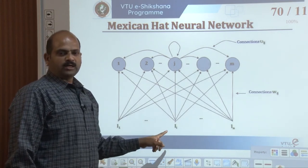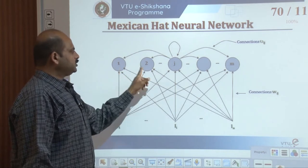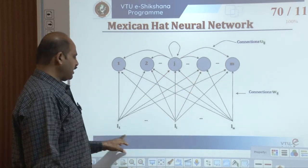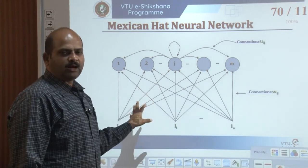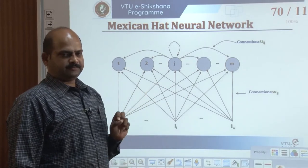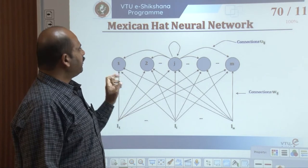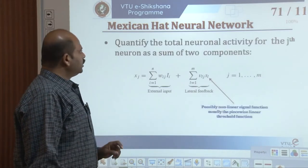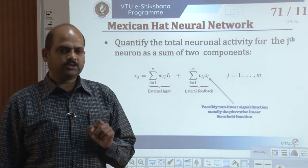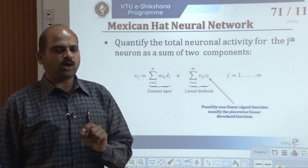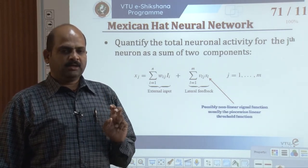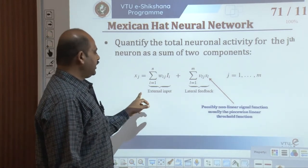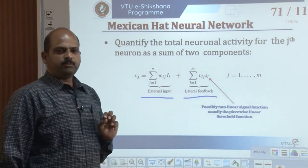A linear array of neurons with Mexican hat connectivity has neurons indexed 1, 2, 3, ... up to j and M, with different lateral interactions. The Mexican hat neural network can classify the total neural activity of the j-th neuron as the sum of two components: the neuron signal function (usually the piecewise linear threshold function) receiving external input, and lateral feedback.